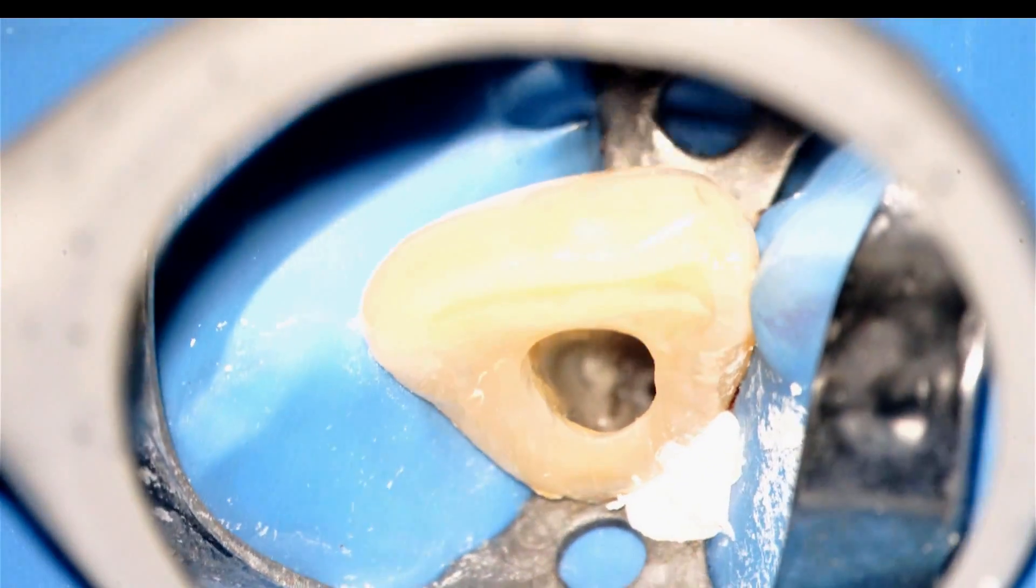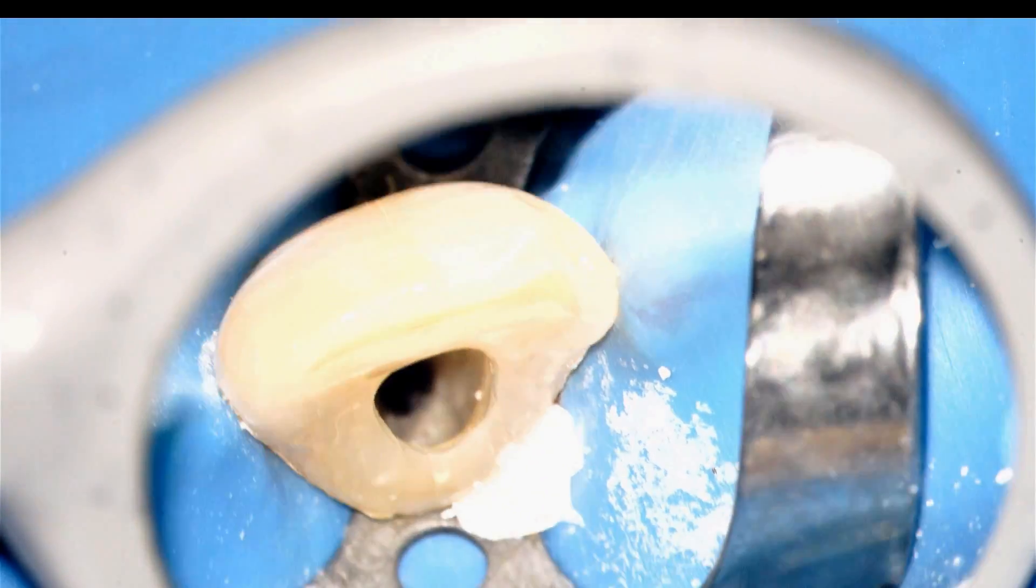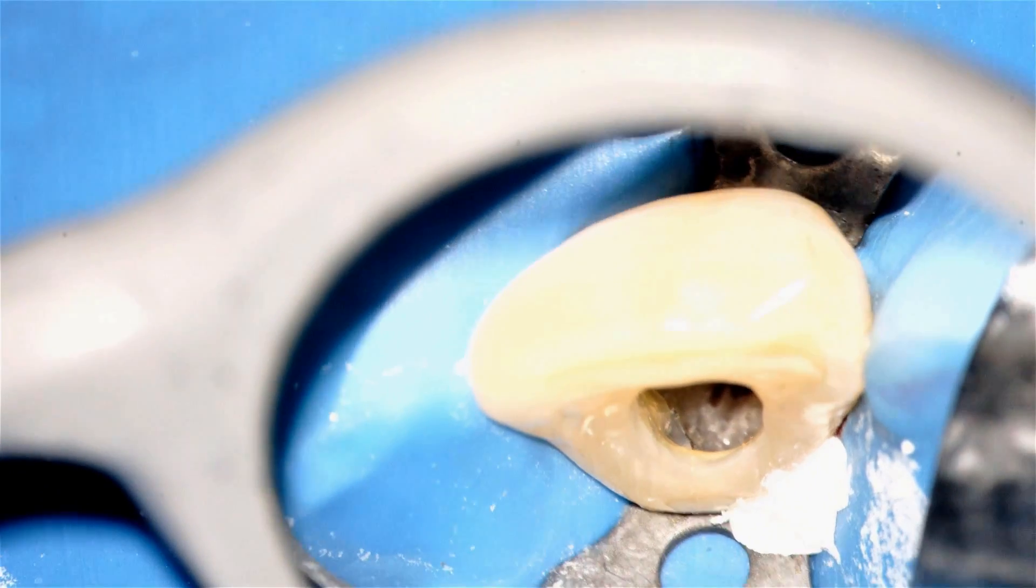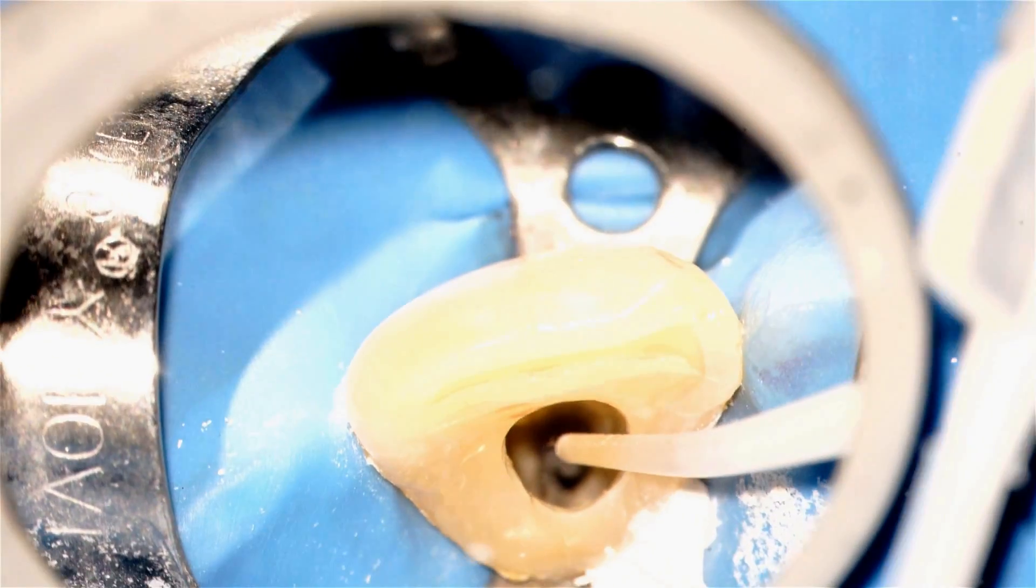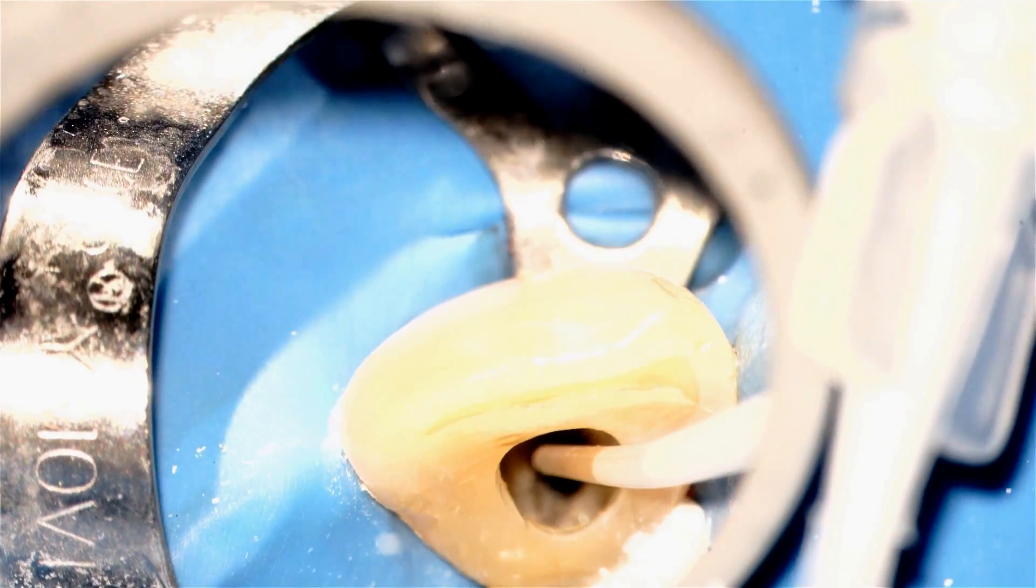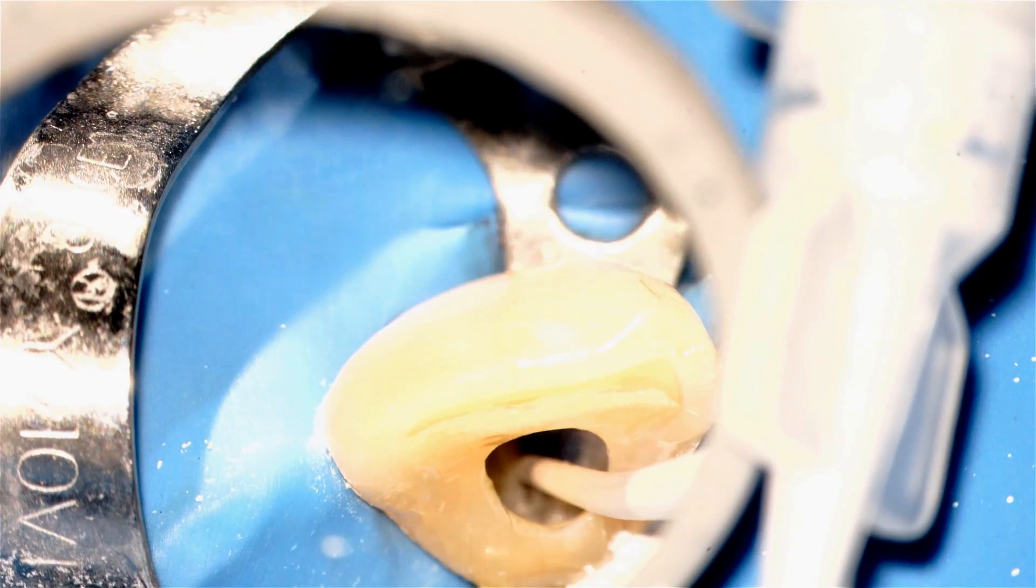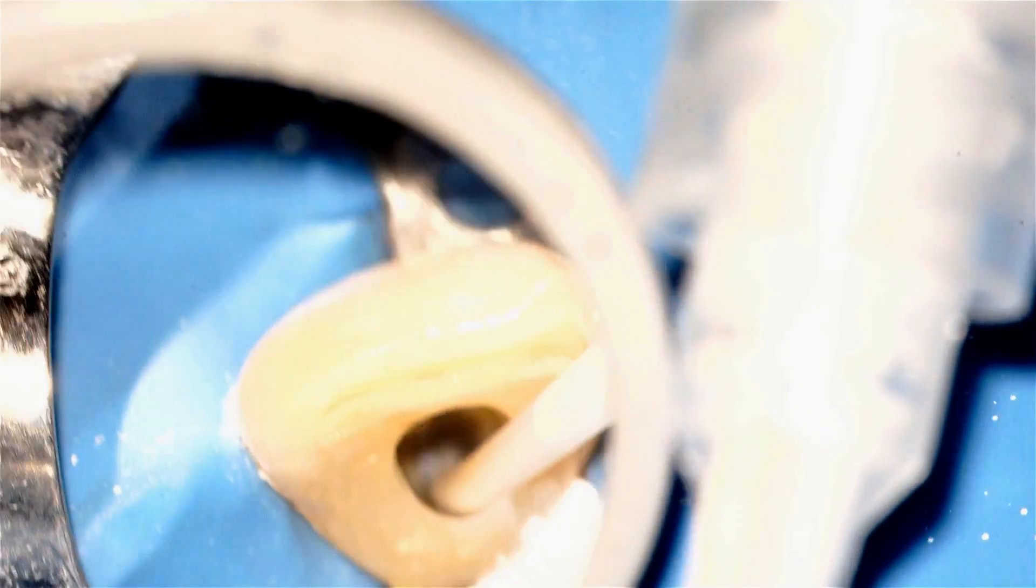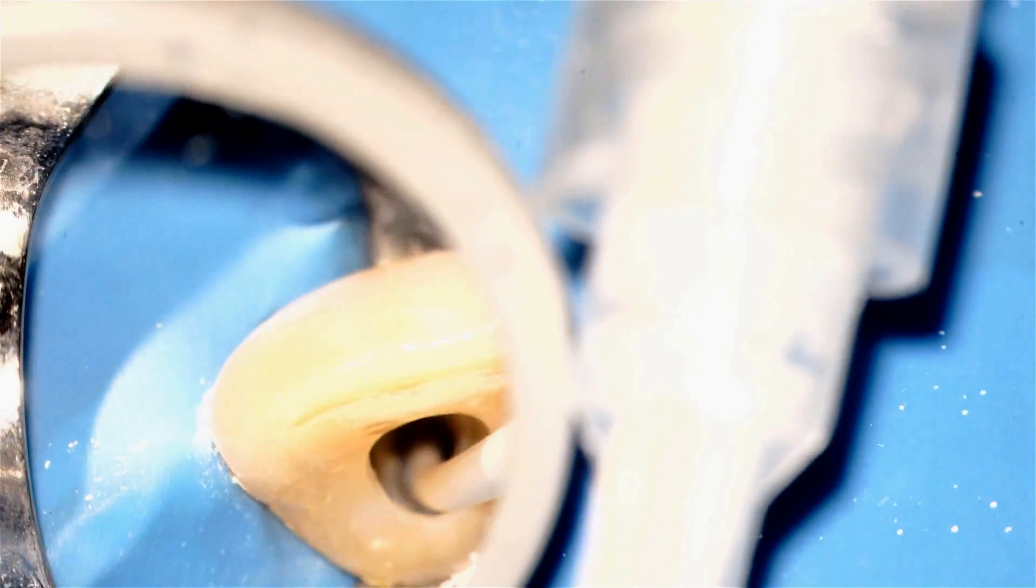You can note that the lingual-distal lingual defect corresponds exactly to what we saw and mapped on the CT. This is the application of the endosequence bioceramic. It comes in a very narrow syringe with very high flow, and it can be injected deep into the canal.